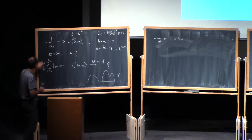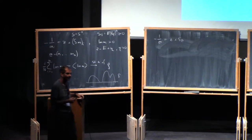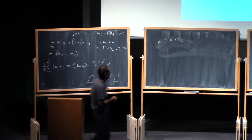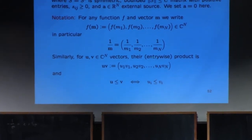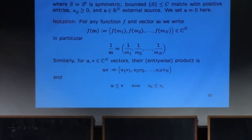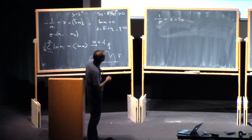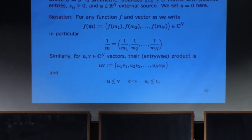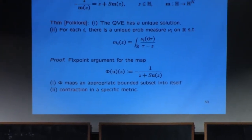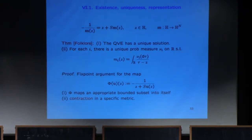Let me discuss the existence and uniqueness of the solution of this equation - this is sort of a folklore theorem. The statement is that the QVE, with the side condition that M is component-wise in the upper half plane, has a unique solution for every z in the upper half plane. Moreover, there is a representation: for every i, there is a unique probability measure on the real line such that M_i is the Stieltjes transform of that measure. This is natural, since M_i is supposed to approximate a resolvent, which is itself a Stieltjes transform.